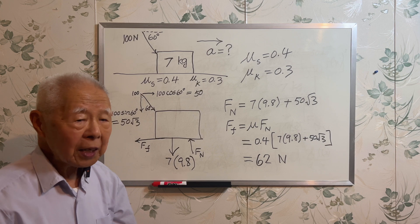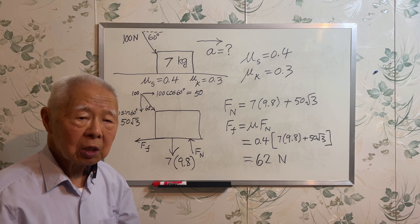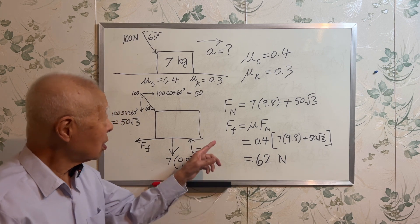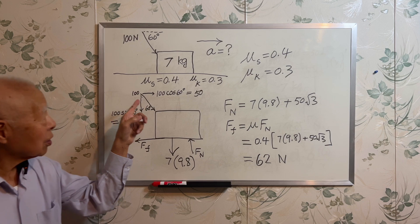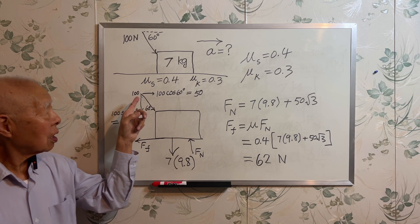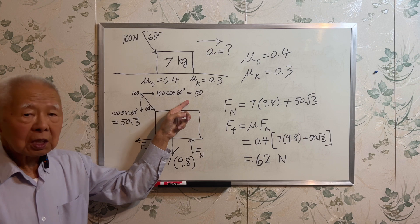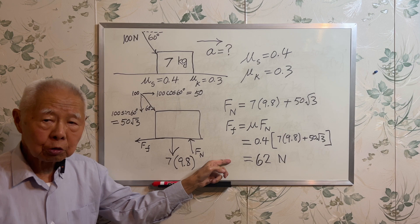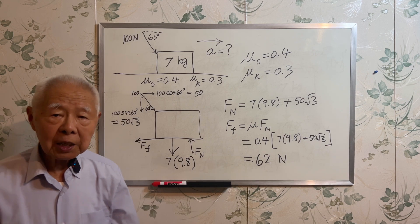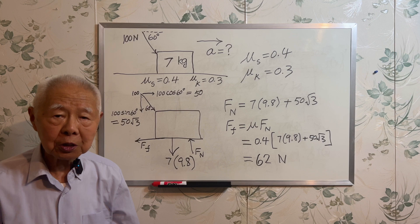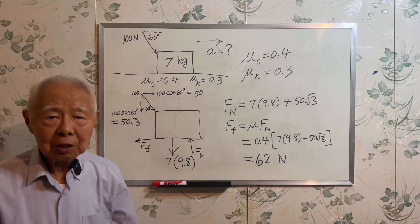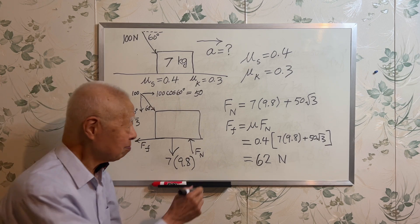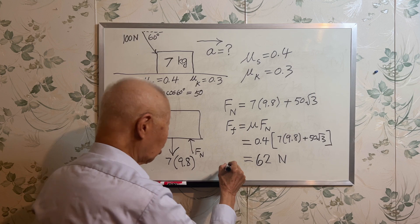Let's see what is the applied force in the horizontal direction. The applied horizontal component is 50 Newtons, but the friction force is 62 Newtons. The applied force is less than the friction force. Therefore, there is no horizontal motion. The acceleration should be 0. No motion.